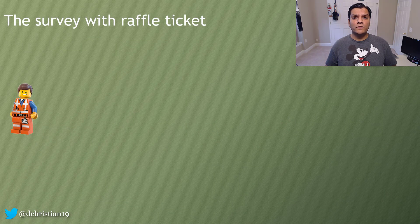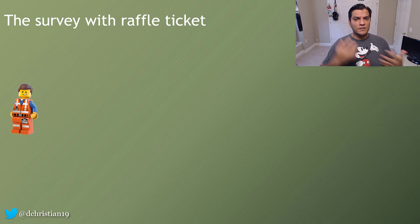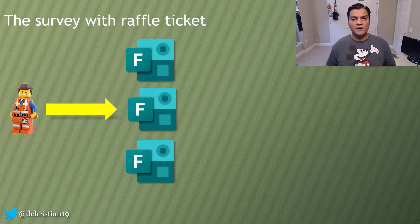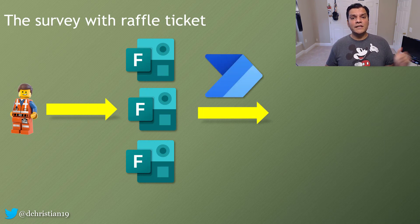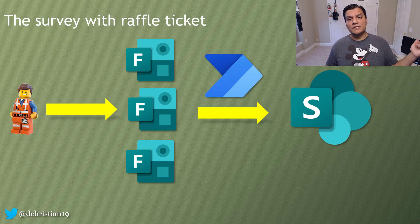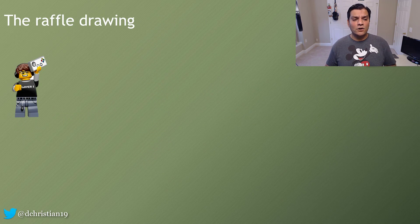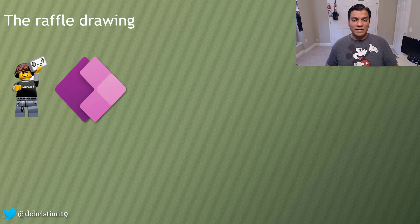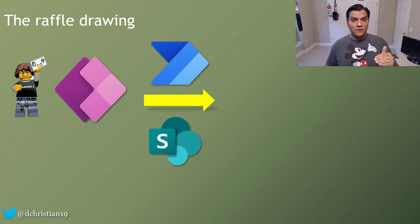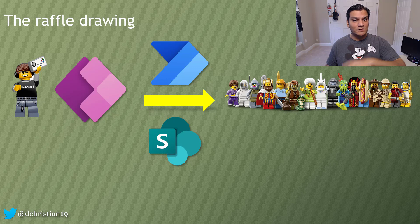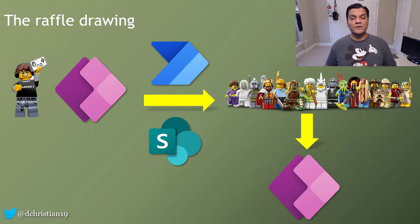Before I go into the technical piece, I want to give you an overview of what is involved in this raffle ticket process. Each attendee for the conference or summit will fill out a Microsoft Form for each breakout session. For each form, a flow is triggered that saves the information to a SharePoint list. When it's time for the raffle drawing, the coordinator hits a button on the app, which triggers a flow that uses a rand function to randomly pick an item from the SharePoint list and presents that person's name back in the app.